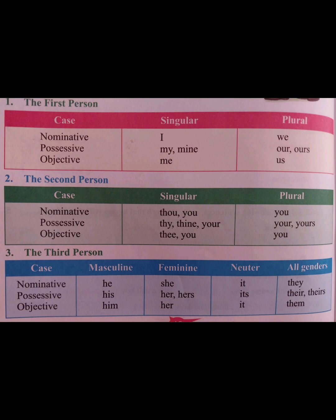Now let's see possessive case. Possessive pronouns do not use apostrophes to show ownership. Mine, yours, his, hers, its, ours, theirs — all are possessive pronouns. Here, 'my' and 'mine' are singular forms. 'Our' and 'ours' are plural forms.